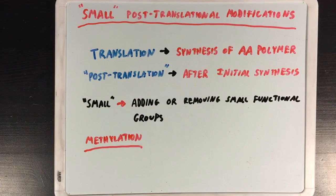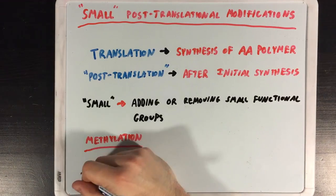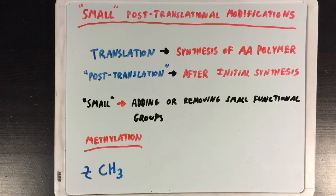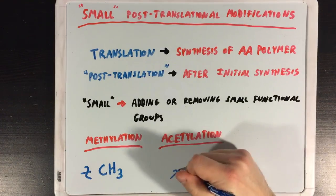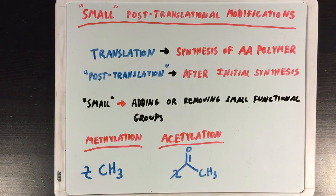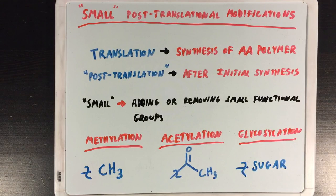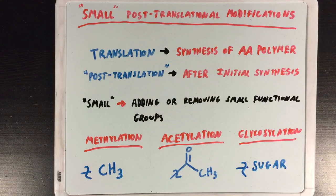Methylation is a modification of a protein that involves the addition of a methyl group, or CH3, to a protein. Acetylation involves the addition of an acetyl group. And glycosylation involves the addition of a sugar molecule. These are just three examples of a huge list, and although small, these modifications can have pretty significant impacts on the protein as a whole.